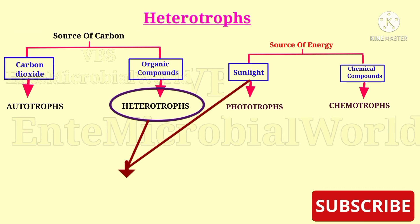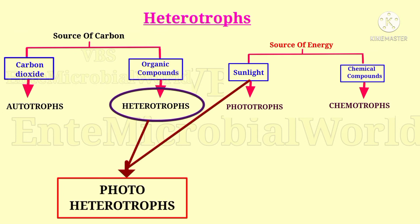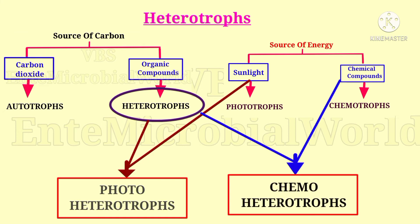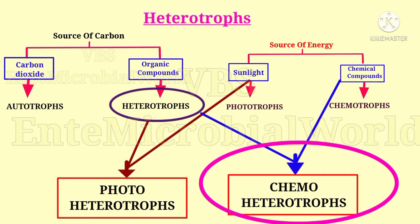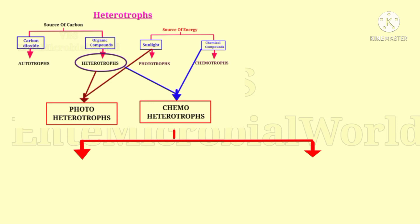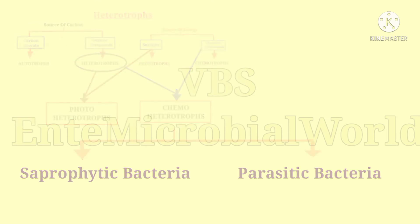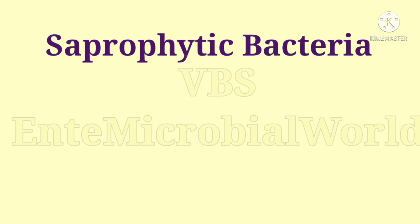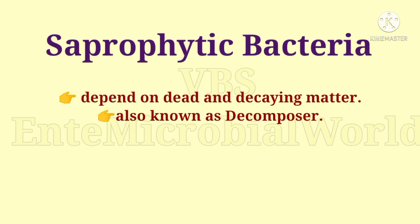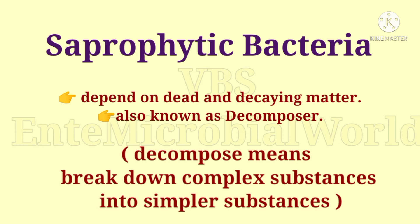Some heterotrophic bacteria can use light energy and are called photoheterotrophs. Some heterotrophic bacteria derive their energy from chemical reactions and are called chemoheterotrophs. Heterotrophic bacteria are further classified into saprophytic bacteria and parasitic bacteria. Saprophytic bacteria are those bacteria which depend on dead and decaying matter. They are also known as decomposers because they can convert complex organic substances into simple chemicals.